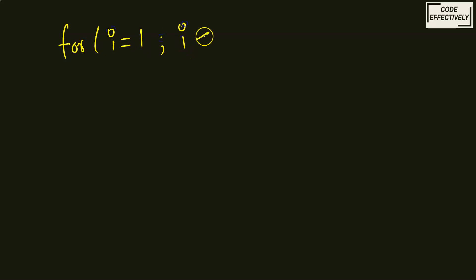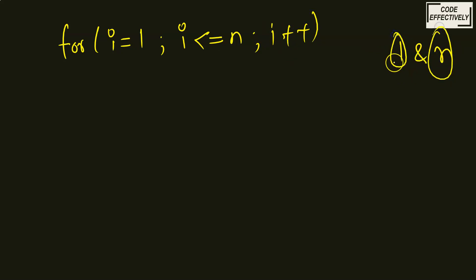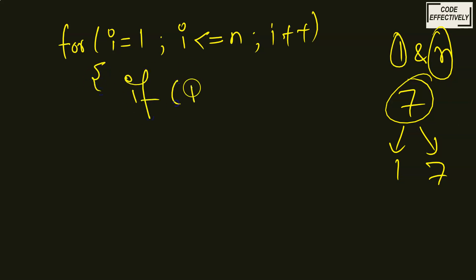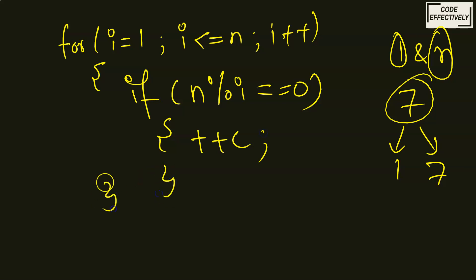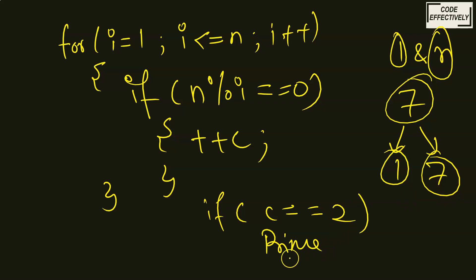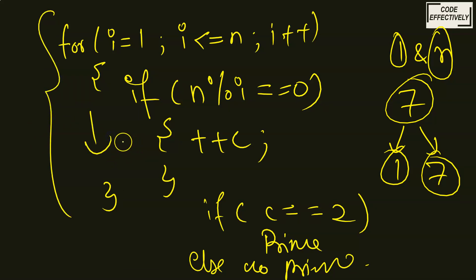The main condition for checking a prime number: we run a loop with int i starting at 1 up to the number itself, and check if n modulus i equals 0, then we increment a counter. If the counter equals 2, it is a prime number — because a prime number has only two divisors, 1 and the number itself. Otherwise it is not prime. You can check the full prime number video with a dry run linked in the description box.